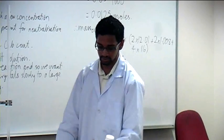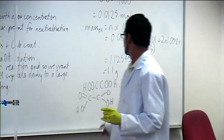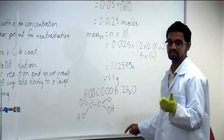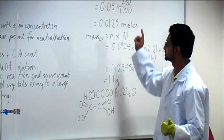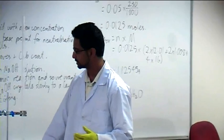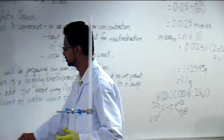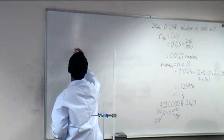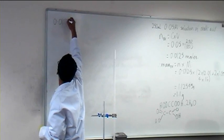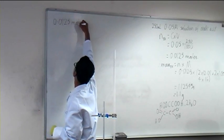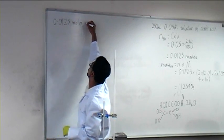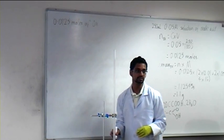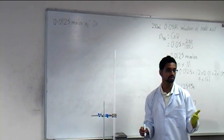We need to recalculate to account for the water. We know we want 1.1 grams of oxalic acid, but we can't measure pure oxalic acid directly. We'll need to recalculate this. We know we want 0.0125 moles of oxalic acid.